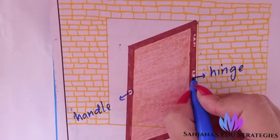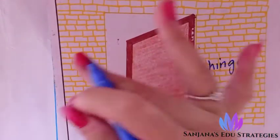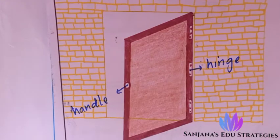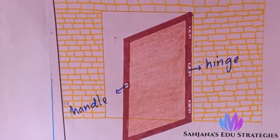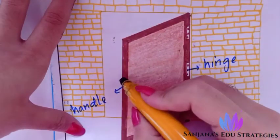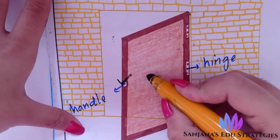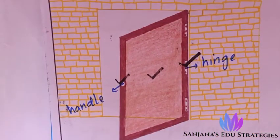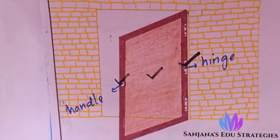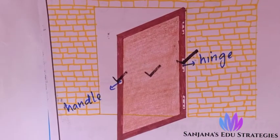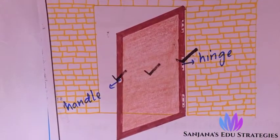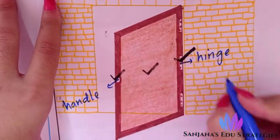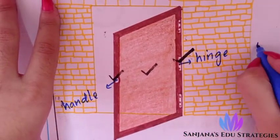There are three places where we can apply force: one is at the handle, another is at the center of the door, and another is at the hinge. We will try each case. First, applying force at the hinge.